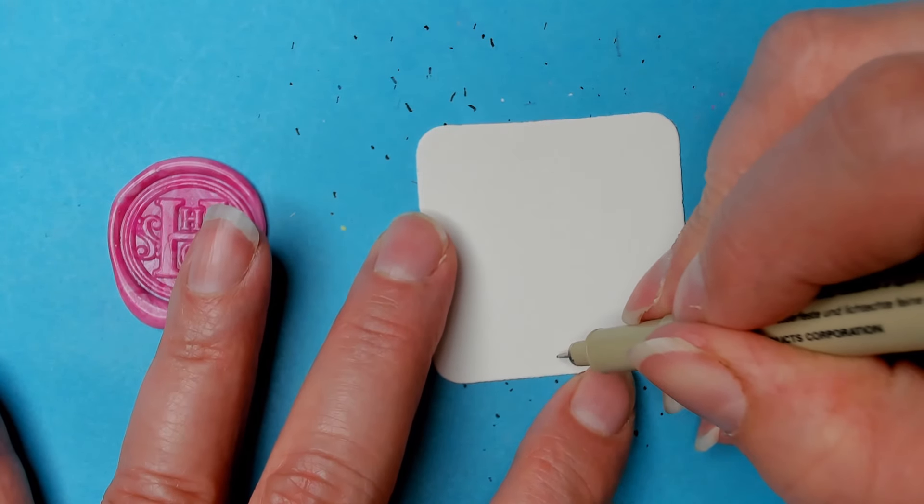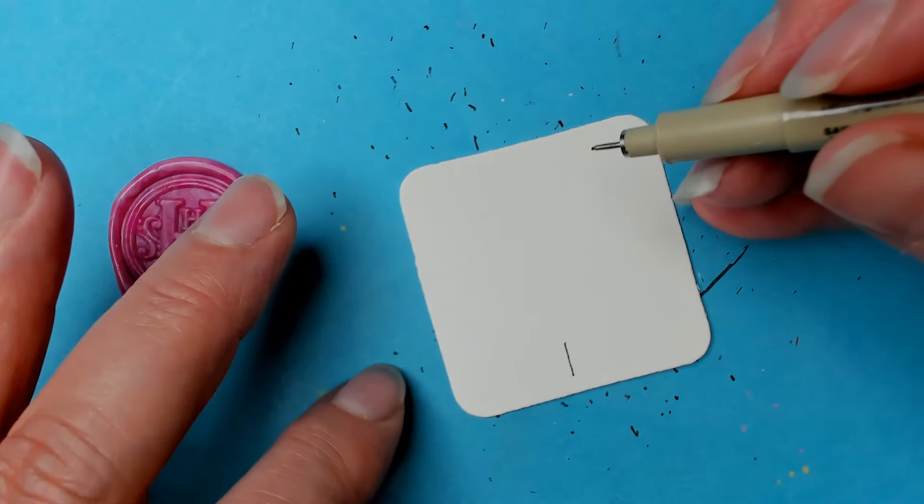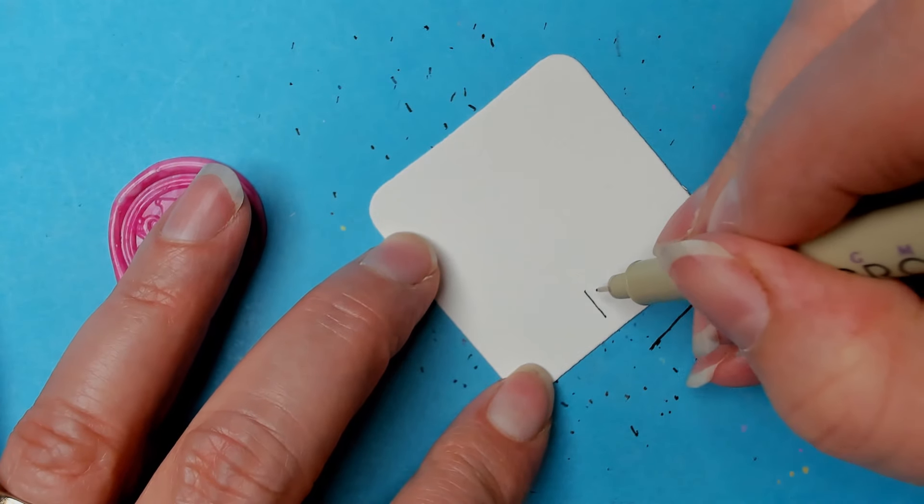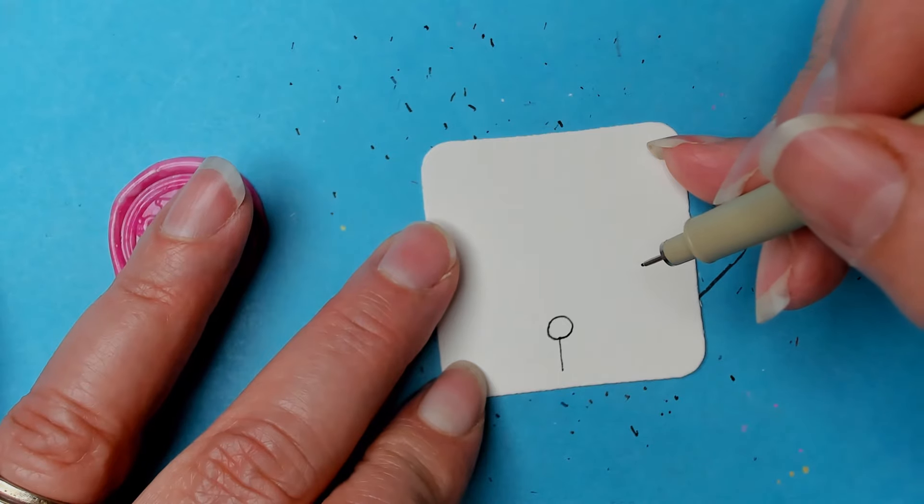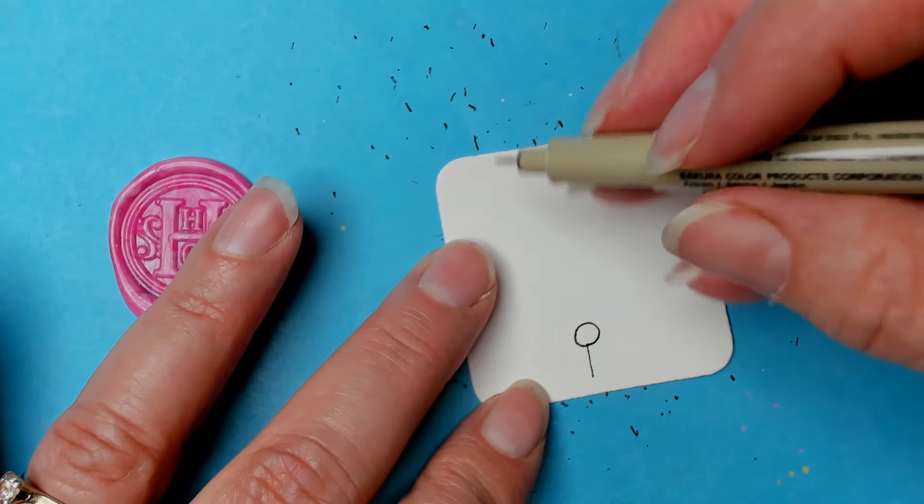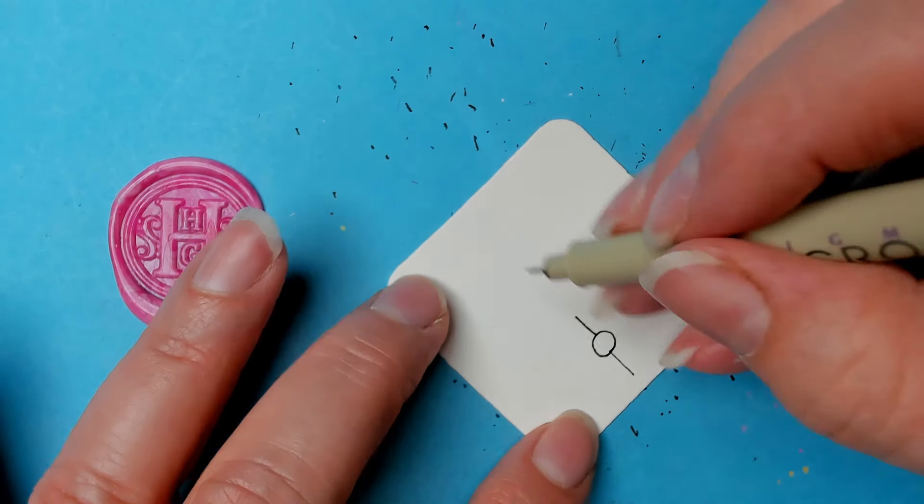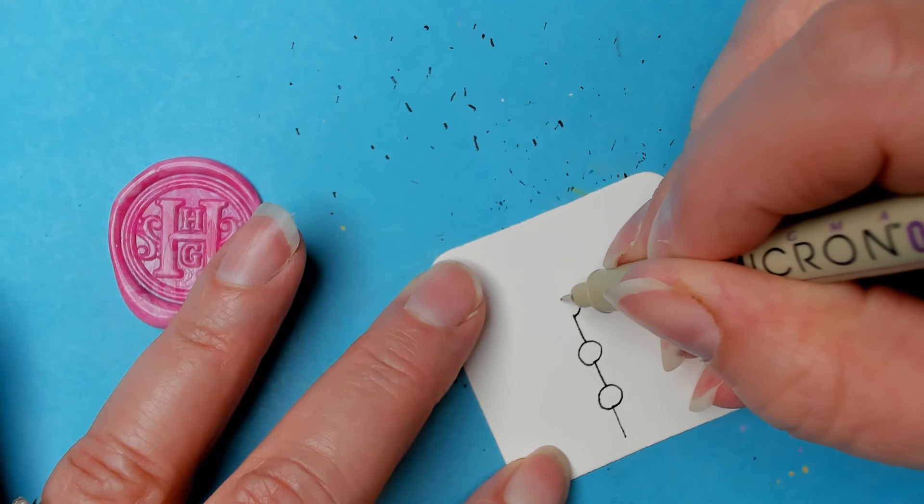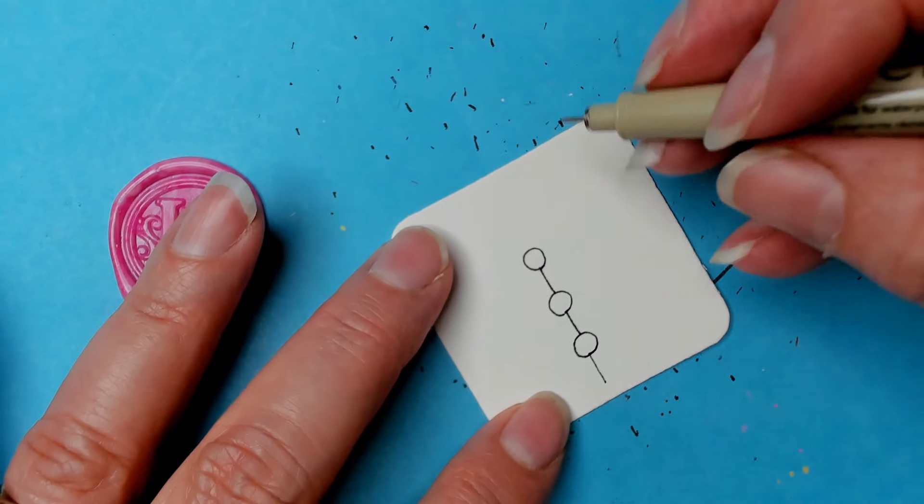Okay, we're going to start with a line. You can do it however you wish and then an orb on top of it. And of course you can do whatever size orb, up to you. Then another line and then another orb, and then another line and another orb. You just have as much fun as you want to have with this.